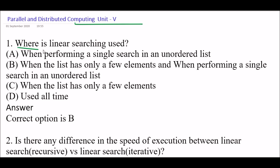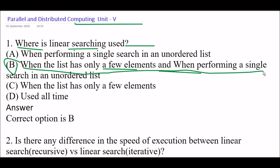First question: Where is linear searching used? Option A: When performing a single search in an unordered list. Option B: When the list has only a few elements and when performing a single search in an unordered list. Option C: When the list has only a few elements. Option D: Used all the time. The right answer is Option B — when the list has only a few elements and when performing a single search in an unordered list.